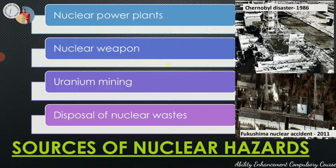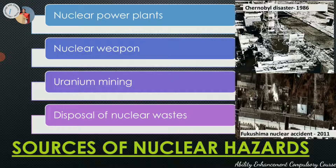The second source of nuclear hazards is the use of nuclear weapons. The bombing of Hiroshima and Nagasaki in 1945 caused brain damage in fetuses, low IQ in children, and mental retardation — effects still experienced today. Even the testing of nuclear weapons, if appropriate measures are not taken, can lead to release of radioactive contaminants into the environment.